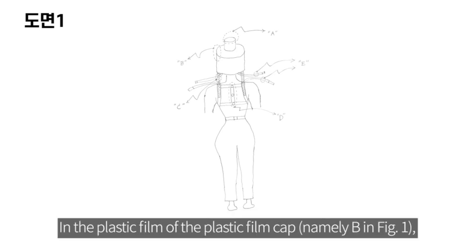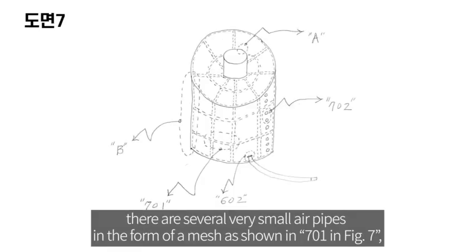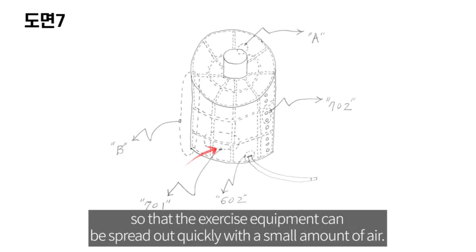In the plastic film of the plastic film cap, namely B in Figure 1, there are several very small air pipes in the form of a mesh as shown in 701 in Figure 7, so that the exercise equipment can be spread out quickly with a small amount of air.